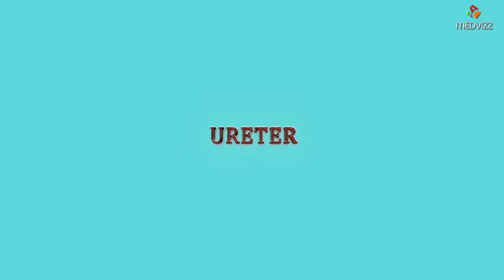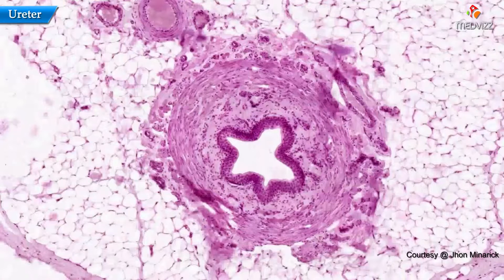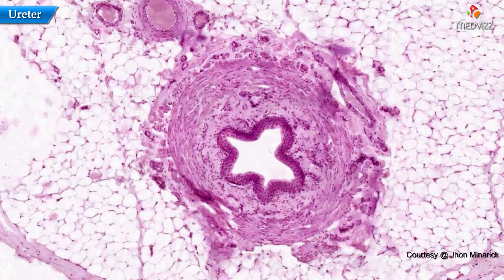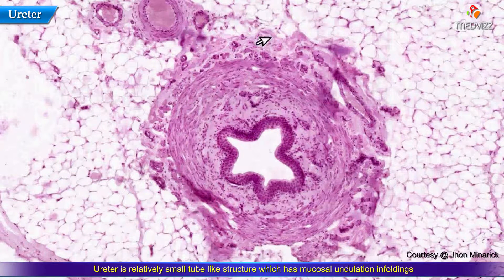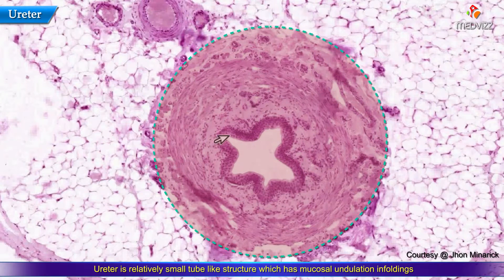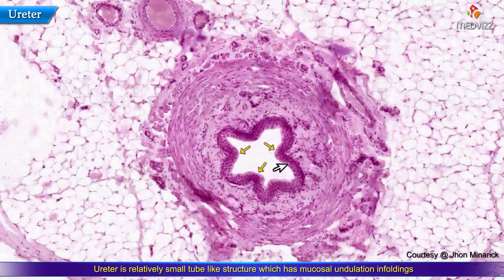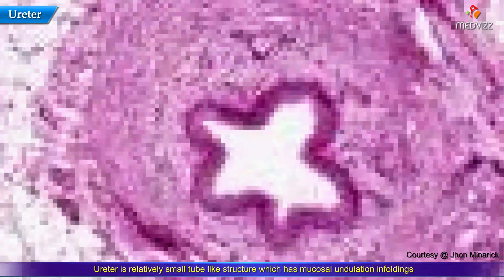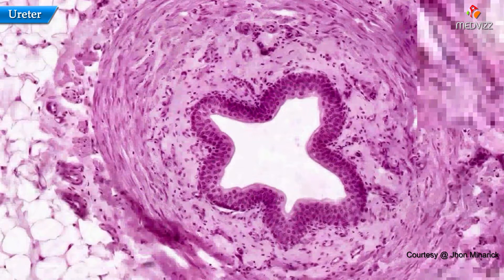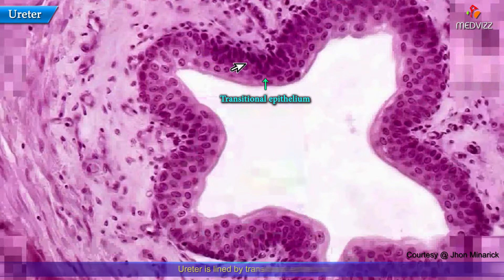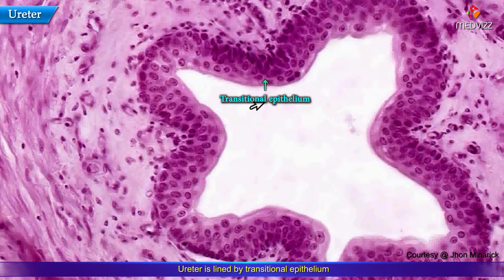This could never ever be anything else in the body except a ureter. Because it's a relatively small structure — it has a little bit of mucosal undulation or enfolding, and if you zoom in on it you will soon see this is classical transitional epithelium. This is a ureter.